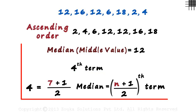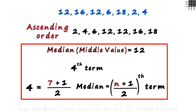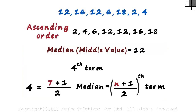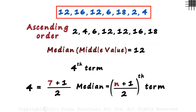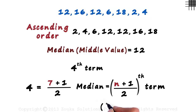Will this work for any and every set? This formula works only when the number of terms in the set is odd — that is, only if n is odd.